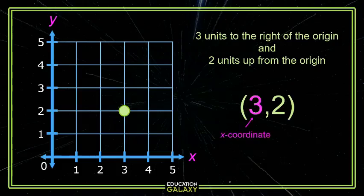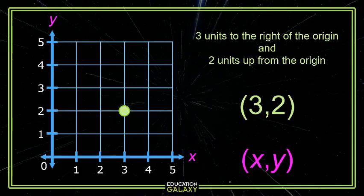And the first number is referred to as the x-coordinate, and then the next number is referred to as the y-coordinate. And generically, sometimes you'll see this referred to as x-y, if we're not talking about a specific location.